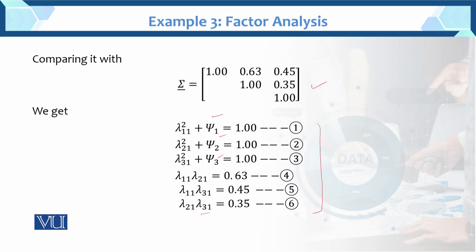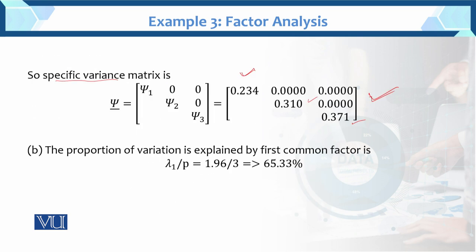We have Psi and the lambda values. Now next is Part B: proportion of variation explained by the first common factor. This is equal to lambda 1 over P. Lambda 1 is the given eigenvalue equal to 1.96, divided by P — the number of variables — which is 3. This equals 65.33%. It means the first factor explains 65.33% of the variation.